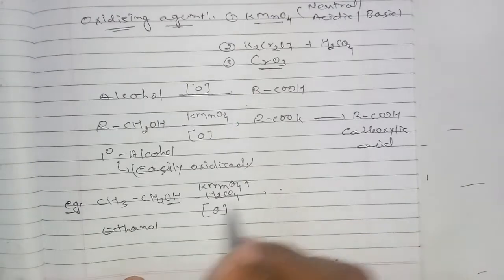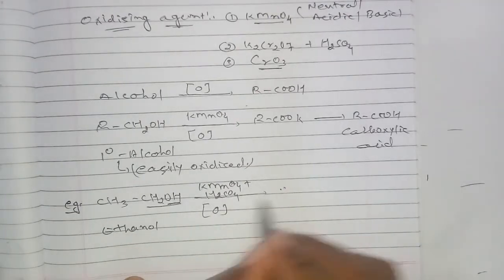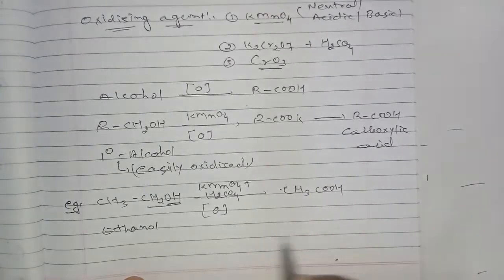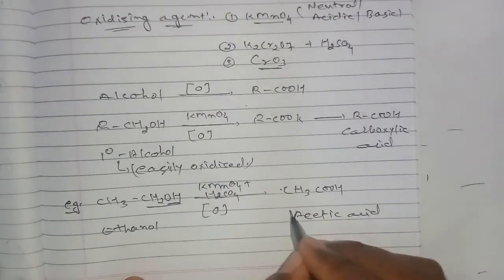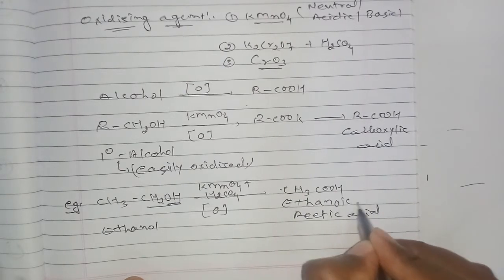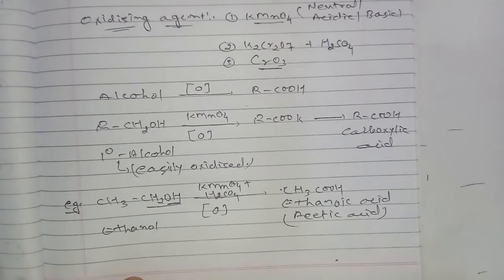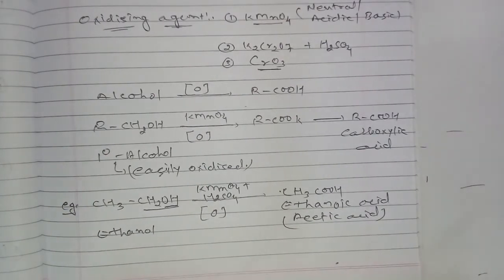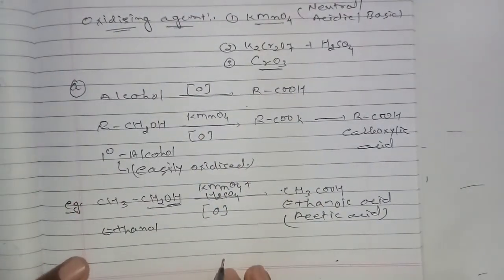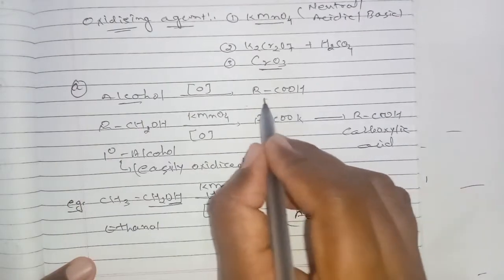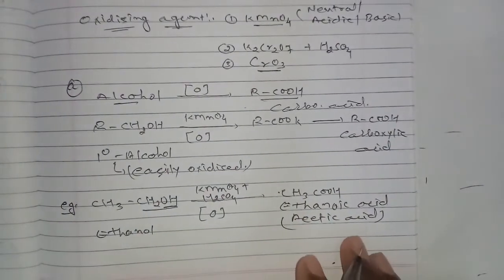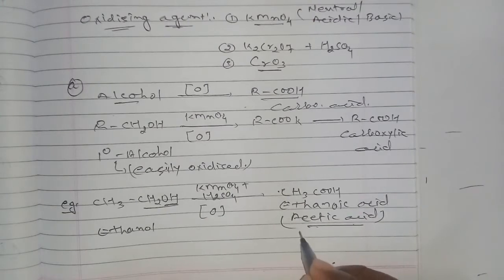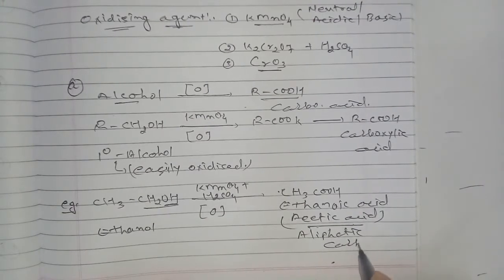Ethanol is oxidized and converted to CH3COOH. The common name is acetic acid, and the IUPAC name is ethanoic acid. This is the first preparation — from alcohol to carboxylic acid. Acetic acid formed here is an aliphatic carboxylic acid.